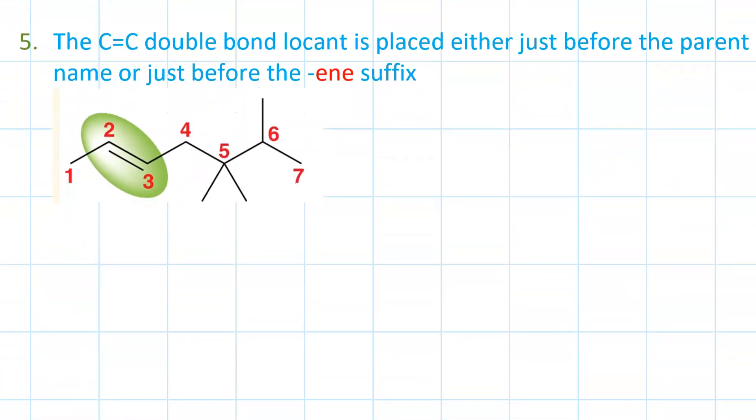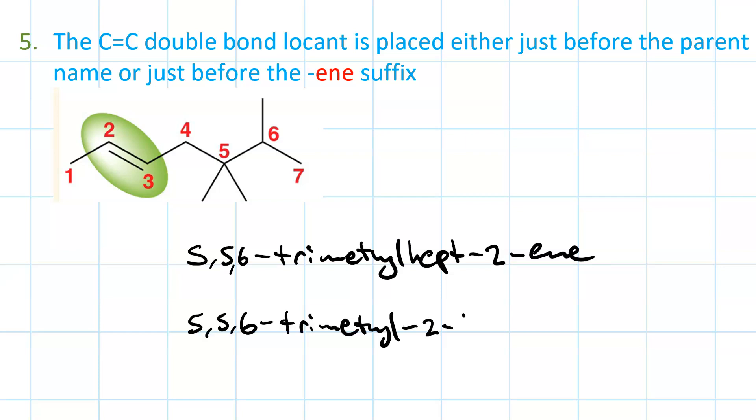So we put the locant for the parent name either just before the parent name or just before the -ene suffix. So 5,5,6-trimethylhept-2-ene, right? The double bond is between carbons two and three and we use the lower of those two numbers. Alternatively, we could go 5,5,6-trimethyl-2-heptene, right? So we put the locant before the name of the parent chain. Either way is acceptable.